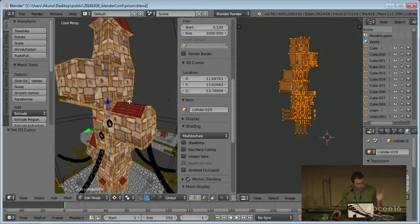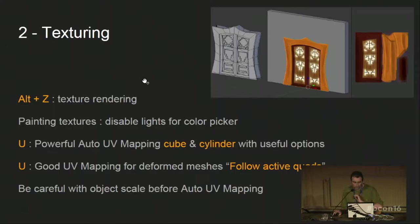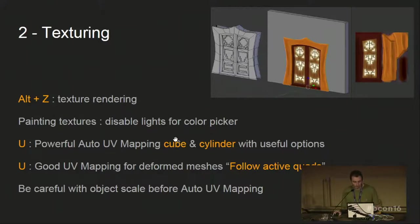So to sum up the texturing part: just be careful with the object scale and object placement when you do auto UV mapping. If you are careful with this, you can save a few minutes of work. When you are iterating every day, this can be really a lifesaver.